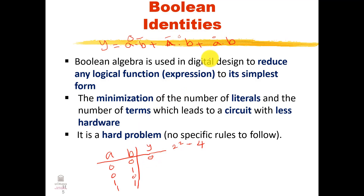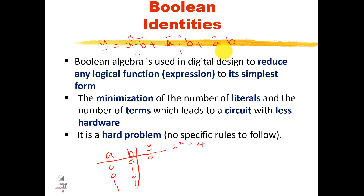For the second case, a=0 and b=1: ab' gives zero; a'b gives one because a'=1 and b=1; ab gives zero. So Y equals one. For the third case, a=1 and b=0: ab' gives one because b'=1; a'b gives zero; ab gives zero. So Y equals one.